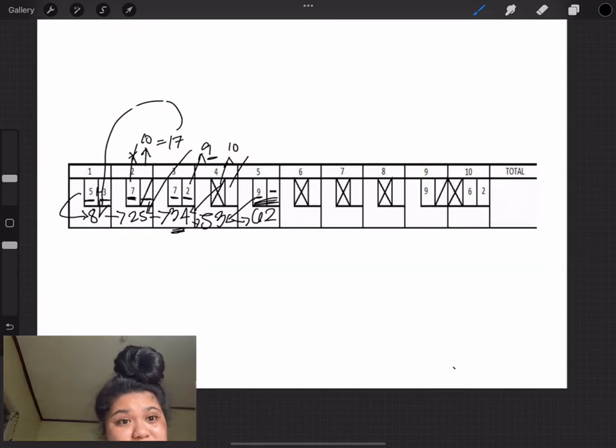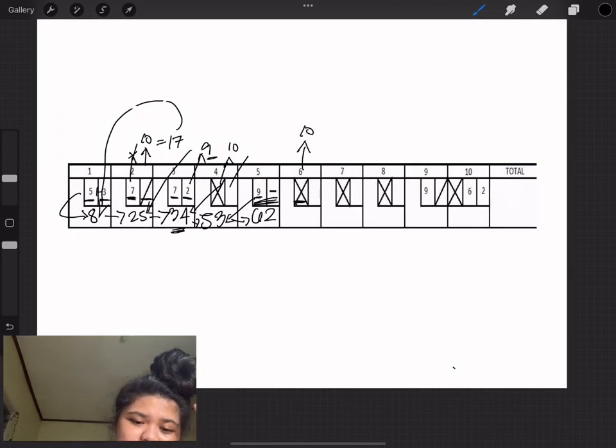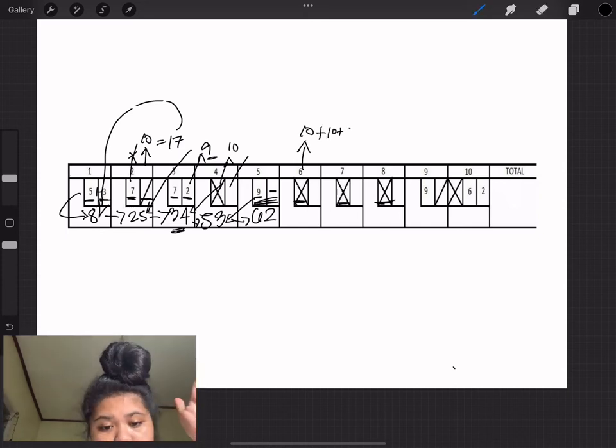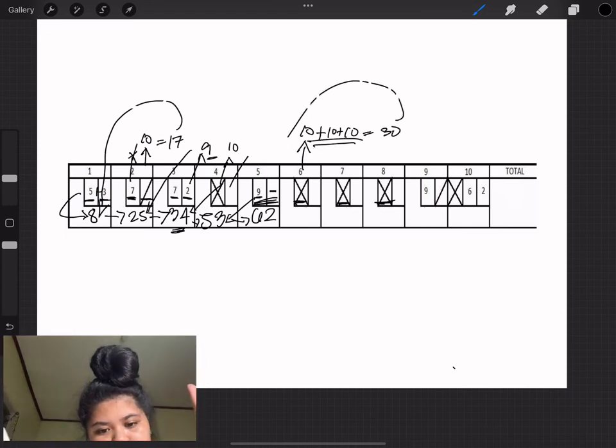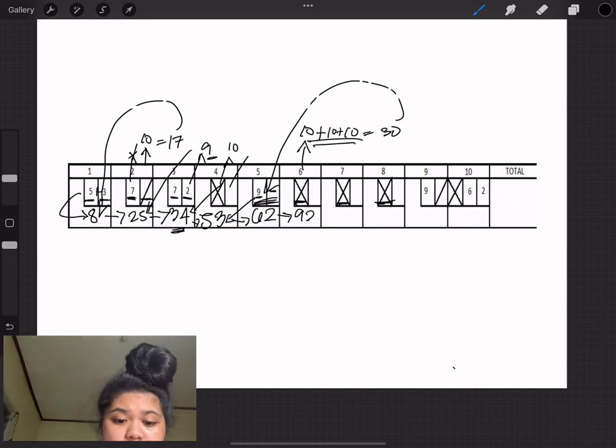For the sixth round, the person manages to wipe out all the pins in the given set. This is called a strike and what happens during a strike is that you get the points of your next 2 balls. In this case, since the person gets 3 consecutive strikes, the first strike will get 10 plus 10 plus 10 equals 30. So add that to 62 and you get yourself a 92 for the sixth score.